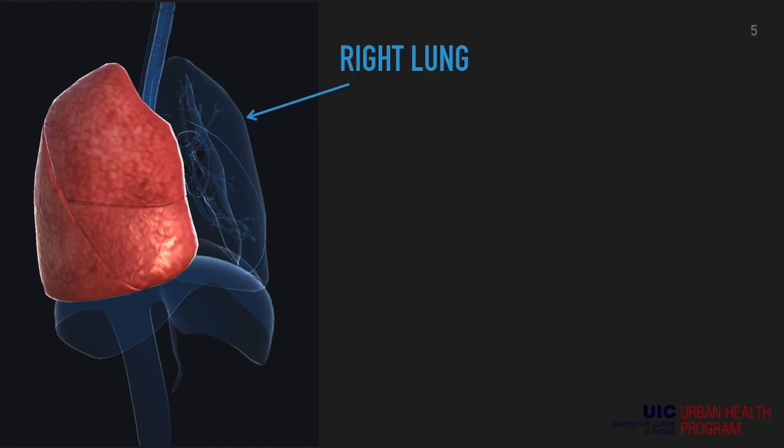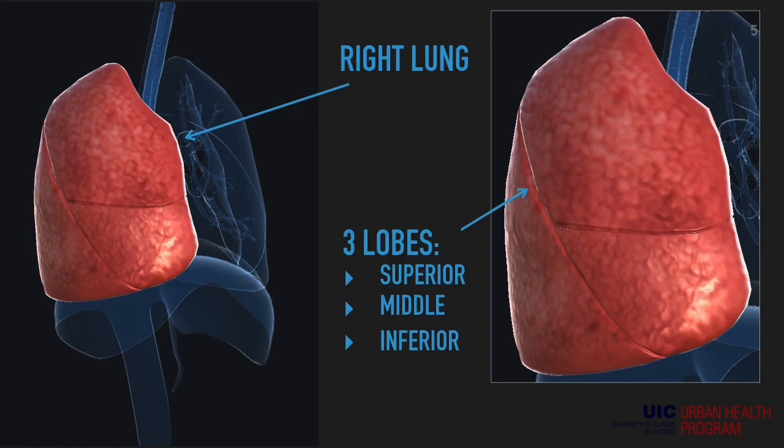Starting with the right lung, as you can see there are three distinct regions, also known as lobes. Starting from top to bottom, they are named superior, middle, and inferior.